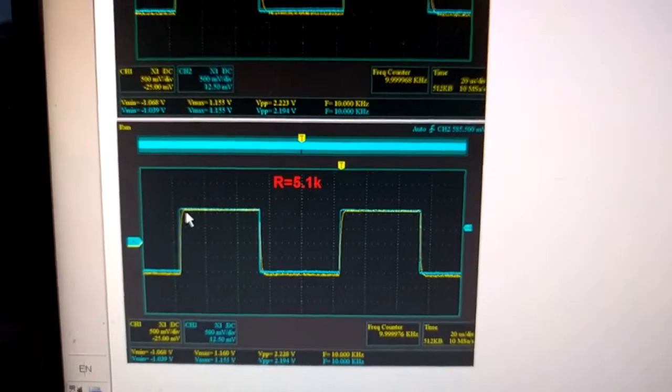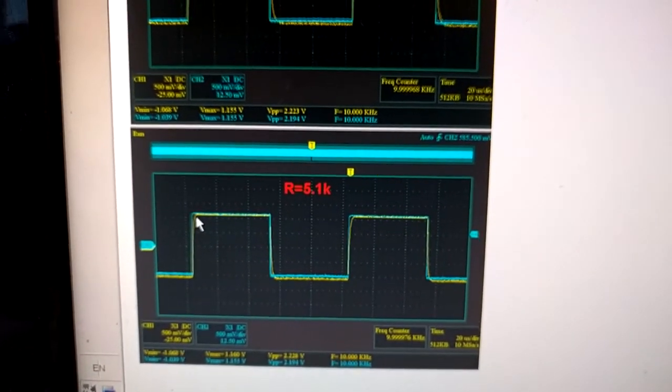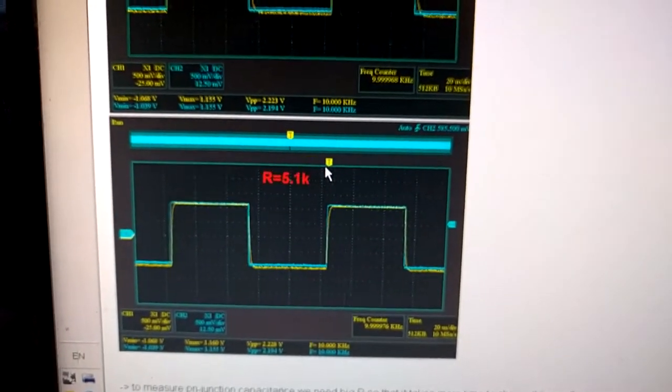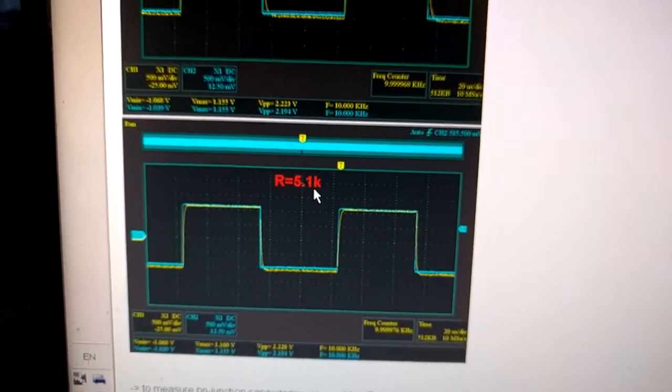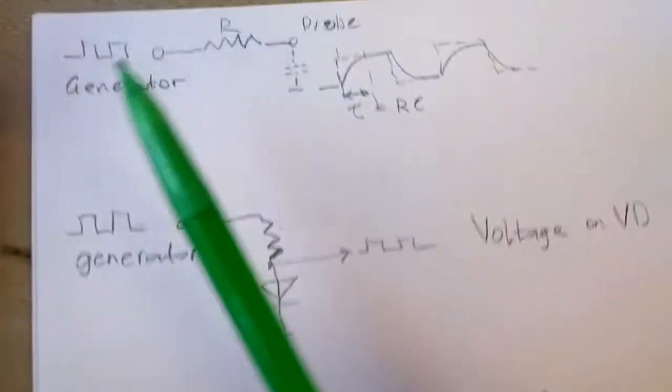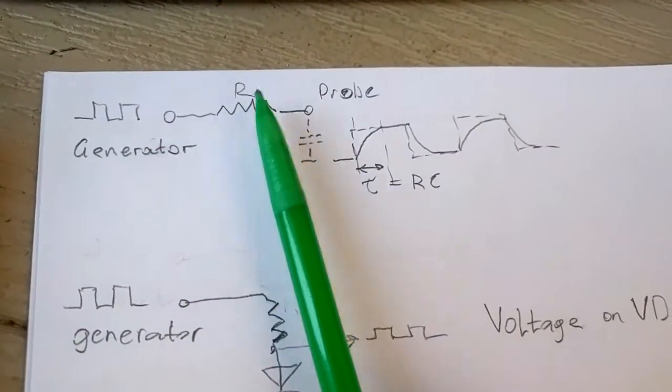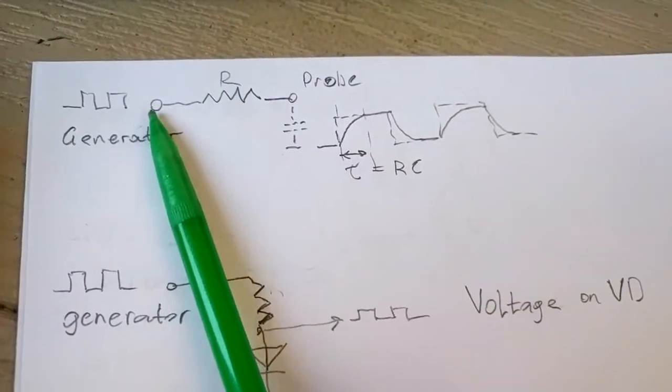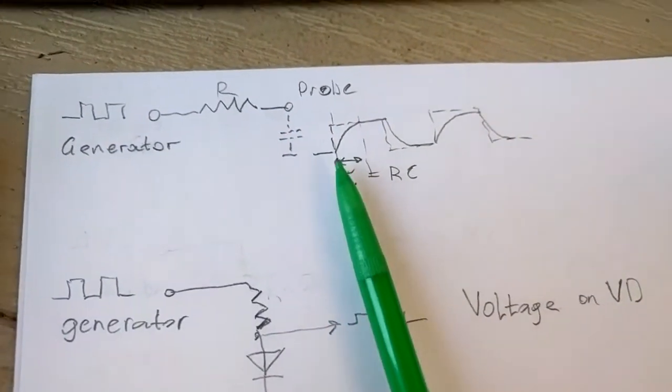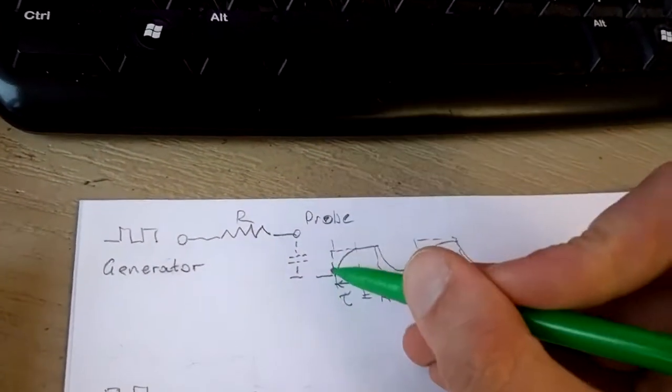I have to probably stop at this one because I cannot go any longer, otherwise I will not be able to test anything. So let's assume I am going to have R equal to 5.1K. In that case, I have this resistor connected to the generator and connected to the probe of the oscilloscope, and I have almost square pulses.